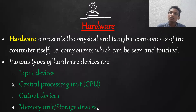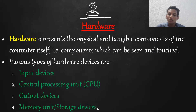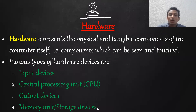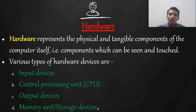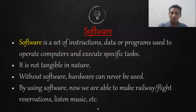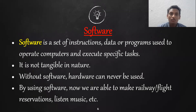The parts we can see and touch are called computer hardware. Different types of hardware devices include input devices, CPU, output devices, memory unit, storage devices, and so on. Input hardware devices provide input to the computer, while output devices display results.